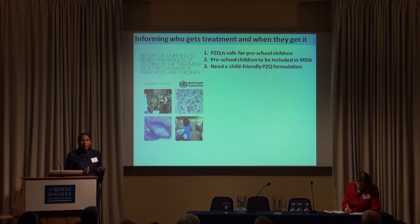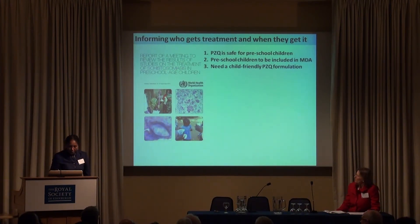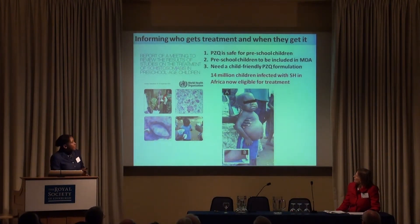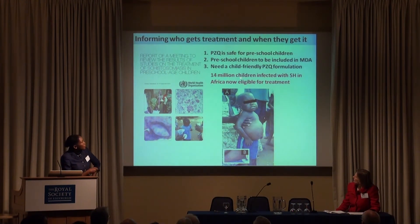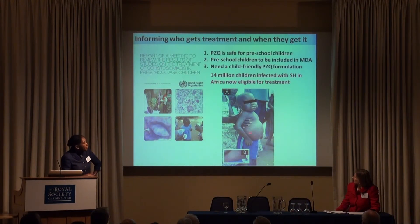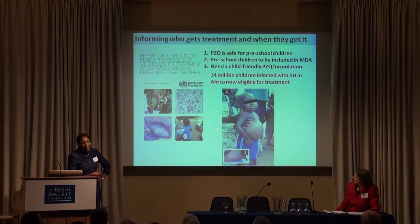Taking these recommendations, now recognized by several governments including Zimbabwe, that means 14 million children aged between one and four in Africa who are currently infected with Schistosoma haematobium can now be treated in mass drug administration programs — before they reach the advanced stage of pathology shown here. This is very, very exciting.